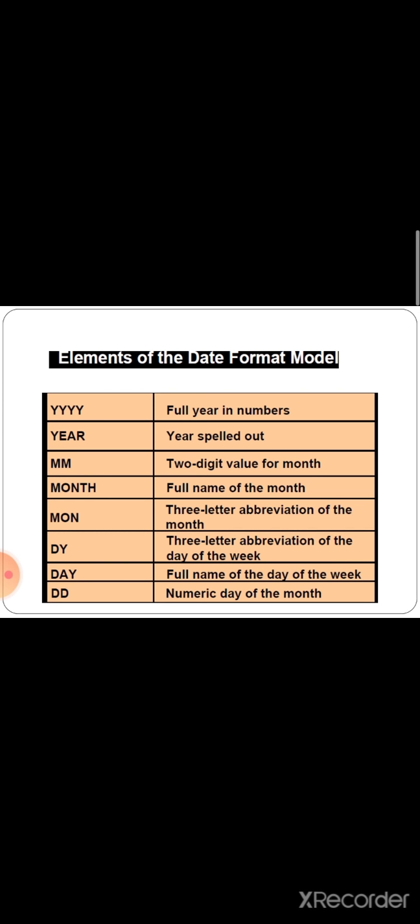Before the example, let's look at the date format model table, which lists some of the available formats. First, four Y's (YYYY) gives the full year in numbers. The next format, YEAR, spells the year out in letters as a character format. MM gives a two-digit value for the month. MONTH in full letters displays the full name of the month. MON gives a three-letter abbreviation of the month — so if it is January, the output is JAN.